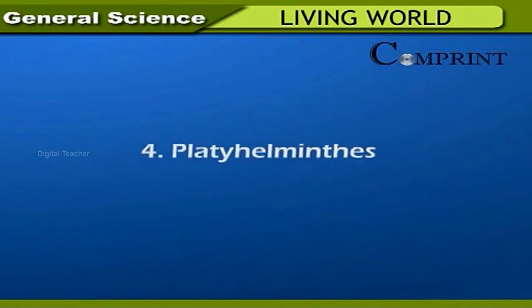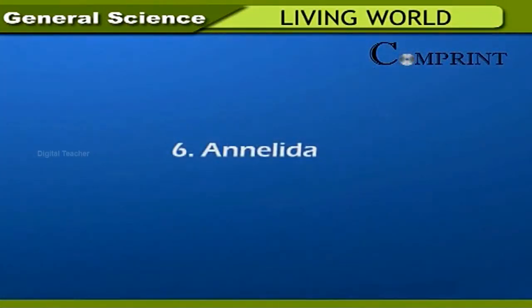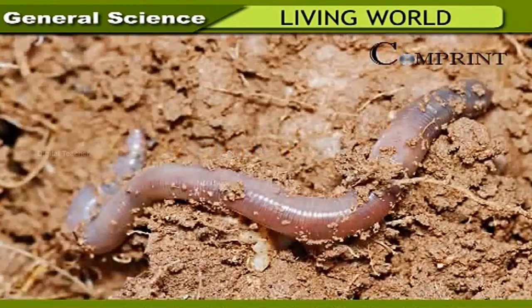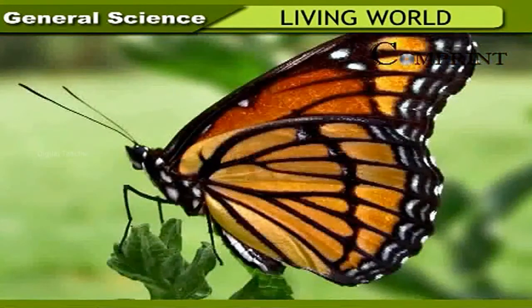Platyhelminthes: their body is flat and ribbon-like; they are mostly parasitic — example: tapeworm. Nematohelminthes: they are parasitic — example: Ascaris. Annelida: they are long and cylindrical — example: earthworm. Arthropoda: they have jointed legs and an exoskeleton — example: butterfly, housefly, cockroach, and scorpion.